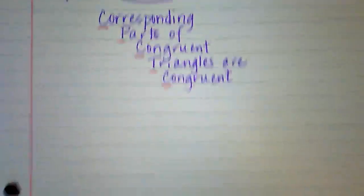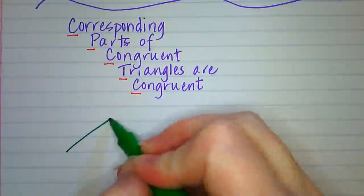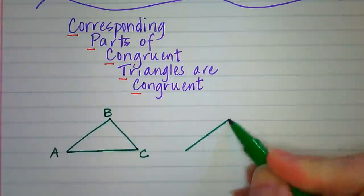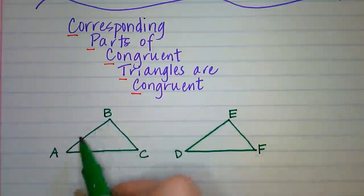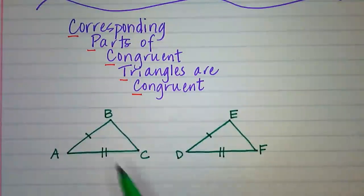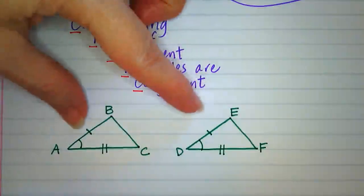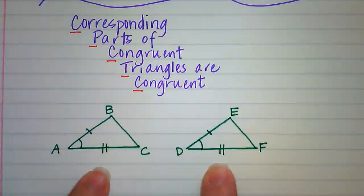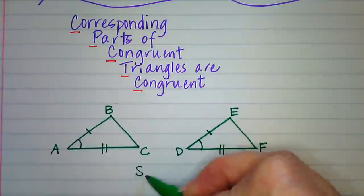If we have two triangles and we know they are congruent to each other — maybe by side-angle-side — let's use this as an example. Say we have triangle ABC and triangle DEF. If those two sides are congruent, those two sides are congruent, and this angle is congruent to that angle, then those are the two corresponding sides and the included angle.